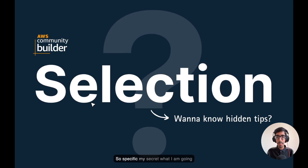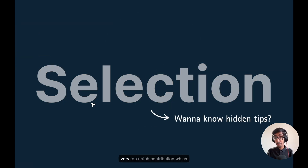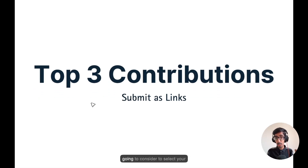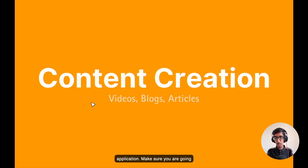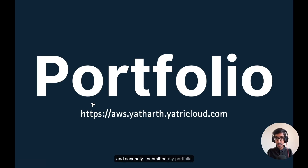Now the selection process — this is my secret. Please make sure you focus on clarity, because it is a very top-notch contribution that is going to be considered to select your application. You need to submit three contributions in your application. Make sure you list them in order: one, two, three. My first suggestion is to give a contribution where you showcase your skills via a YouTube video, a blog, or an article. In my case, I submitted my YouTube video, and secondly I submitted my portfolio which is specific to AWS.